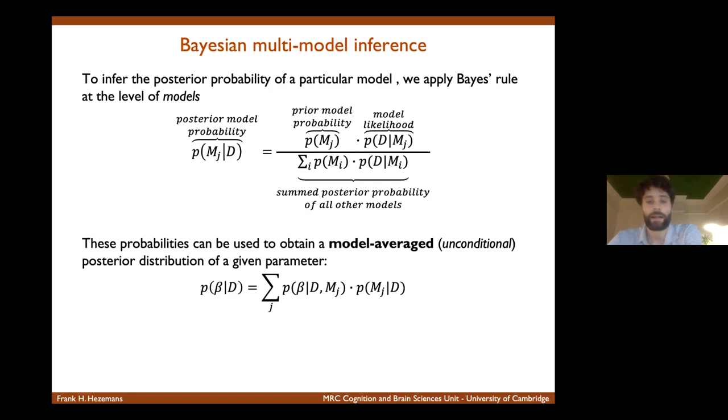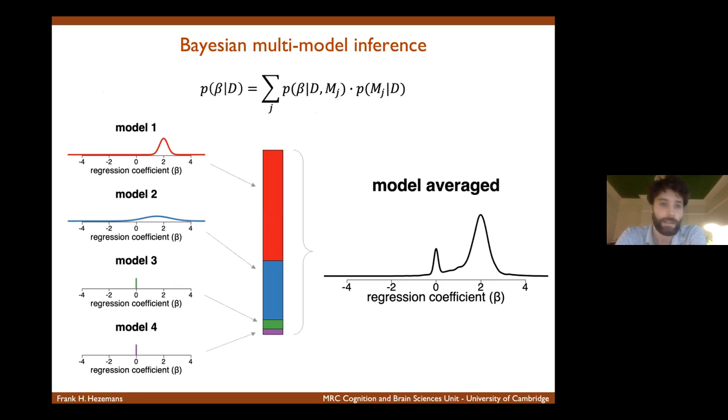And specifically, you see that this term is just a sum of the posterior distribution of a parameter for a given model multiplied by the posterior probability of that model. To show you what that actually looks like, let's say in this toy example, we have four different models under consideration. And this colored column here in the middle reflects each model's posterior probability. And these sum to one, of course.